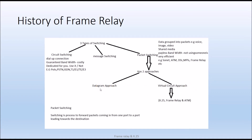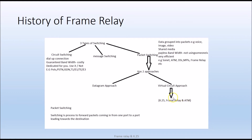In the datagram approach, packets do not follow a particular sequence — they are all over the place. As long as they travel from source to destination, they can travel in any kind of format, as long as they get to the destination. But in the virtual circuit approach, packets follow a systematic route to ensure delivery to the destination. Examples of the virtual circuit approach are X25 and frame relay.